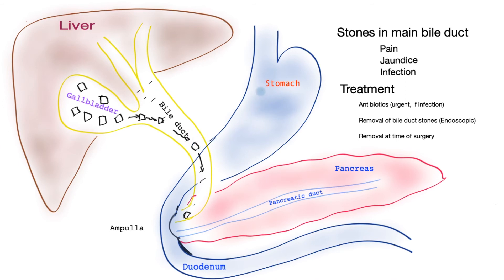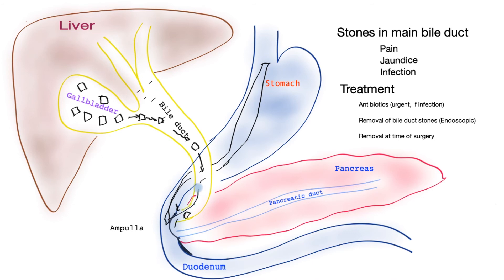The physician treating you may choose to have the stones removed by endoscopy, where a tube is passed through the mouth into the stomach. This tube parks itself next to the opening of the bile duct, makes the opening slightly bigger, and a wire with a balloon attached is passed to trawl the stone out and clear the duct. Following that, gallbladder surgery can be performed. Equally, the stones can be removed at the time of surgery, either as a keyhole or open operation.